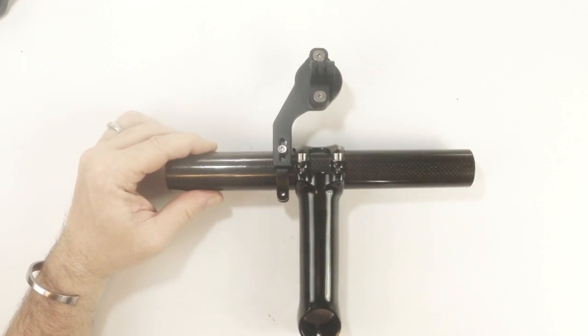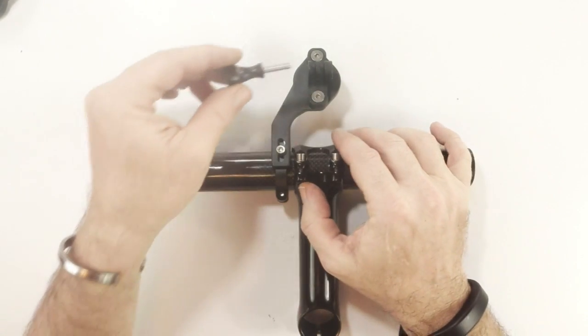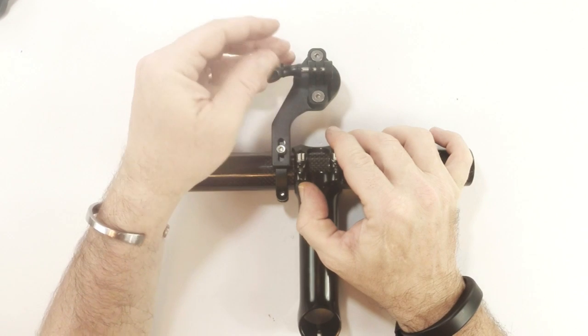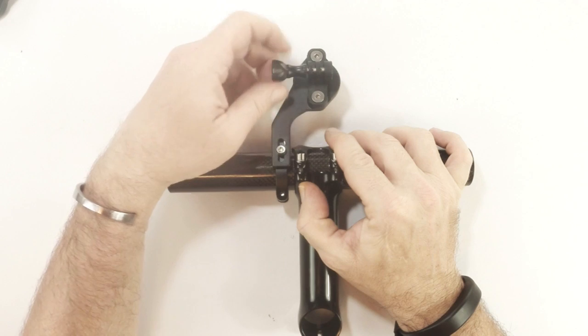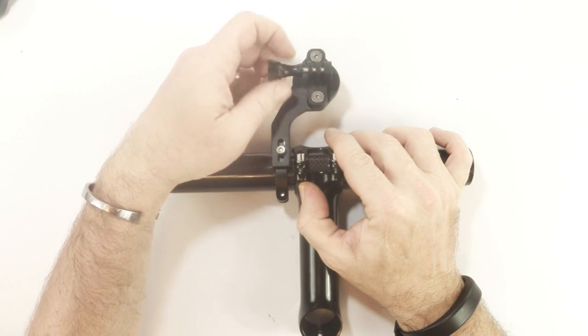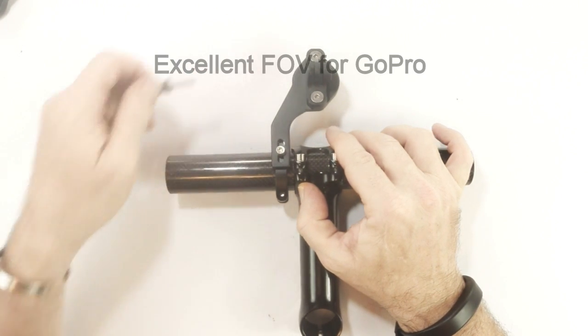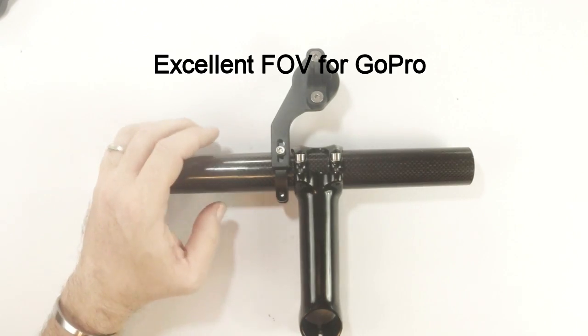For the GoPro, it mounts like a GoPro mount and you use your GoPro screw in here to tighten it down. Now, with the GoPro mount, it places it directly in front of your stem, so you actually get a fantastic field of view.